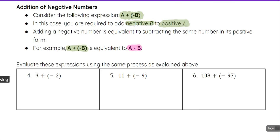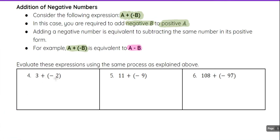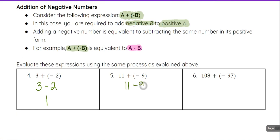We can use this same process on these examples. If we see three plus negative two, we can just write three minus two and then evaluate that. Three minus two gives us one. And 11 plus negative nine is the same as 11 minus nine, which is two.